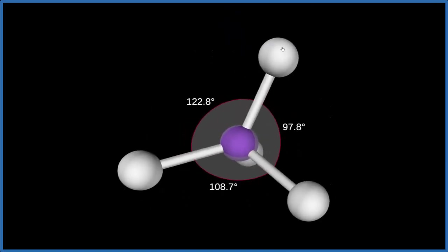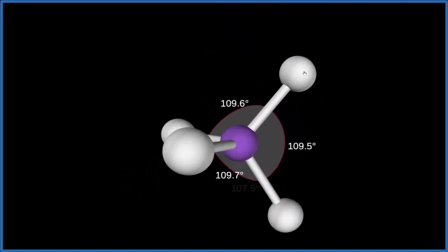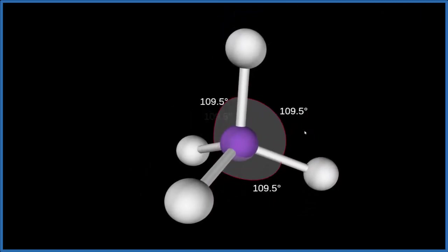That gives us this tetrahedral molecular geometry. The bond angle about 109.5. Our electron geometry is the same because there's no lone pairs on that central carbon.